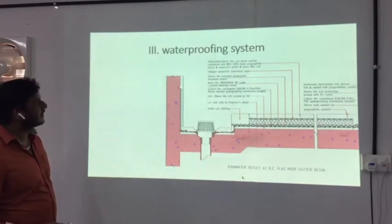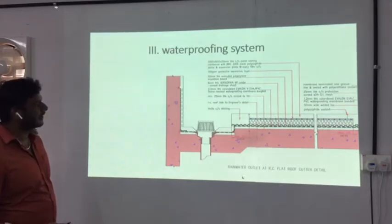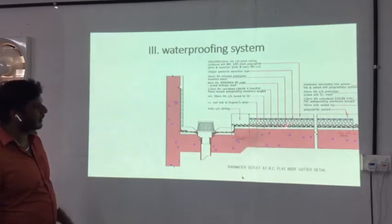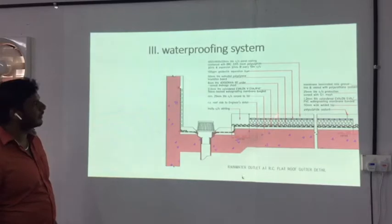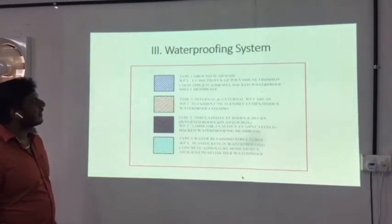These are the typical details for the toilet, wet area, and external area — the cementitious waterproofing. This is the typical detail for the roof slab — rooftop attic roof. This is the waterproofing membrane, slope for cement, insulation board of 25mm above, protection of cement, and the water outlet.